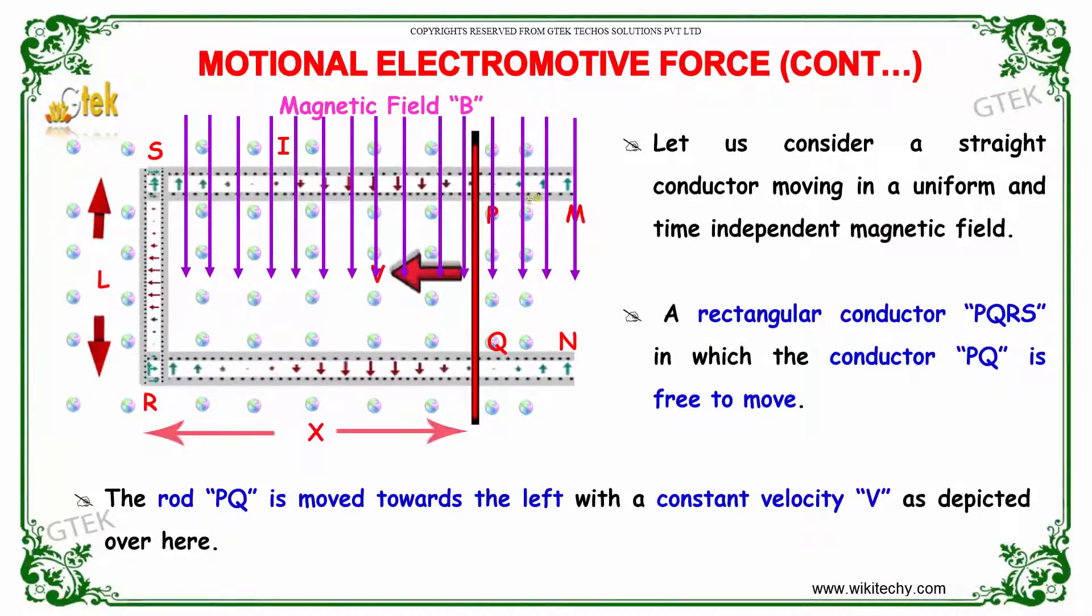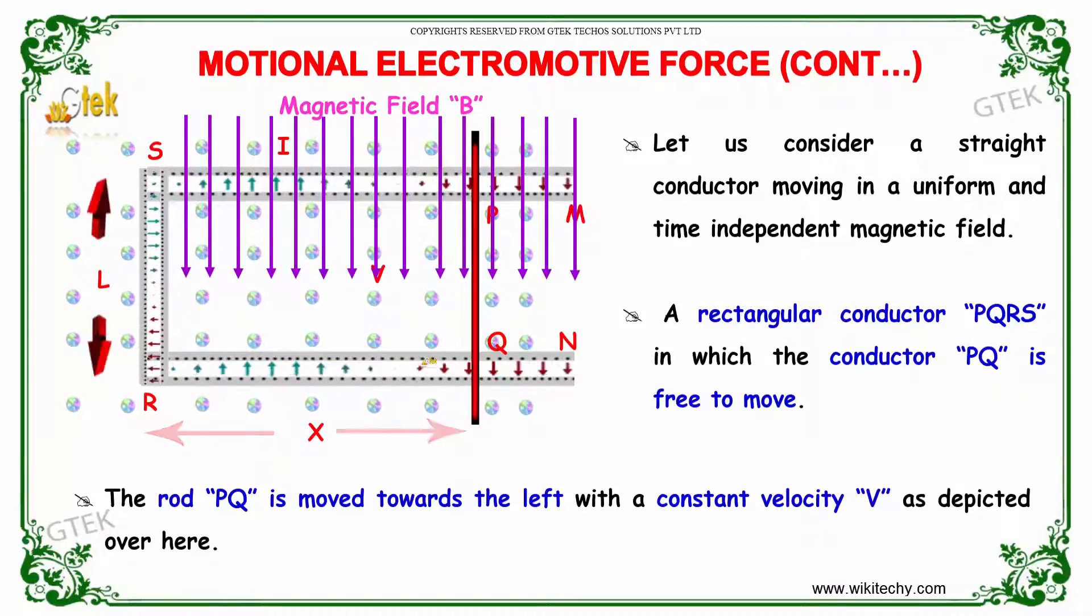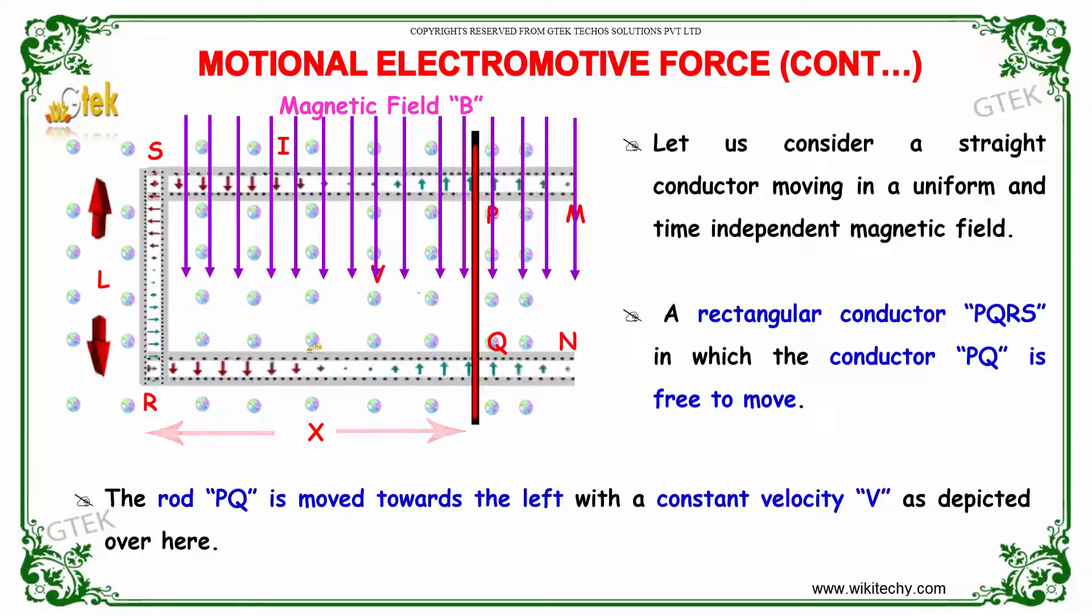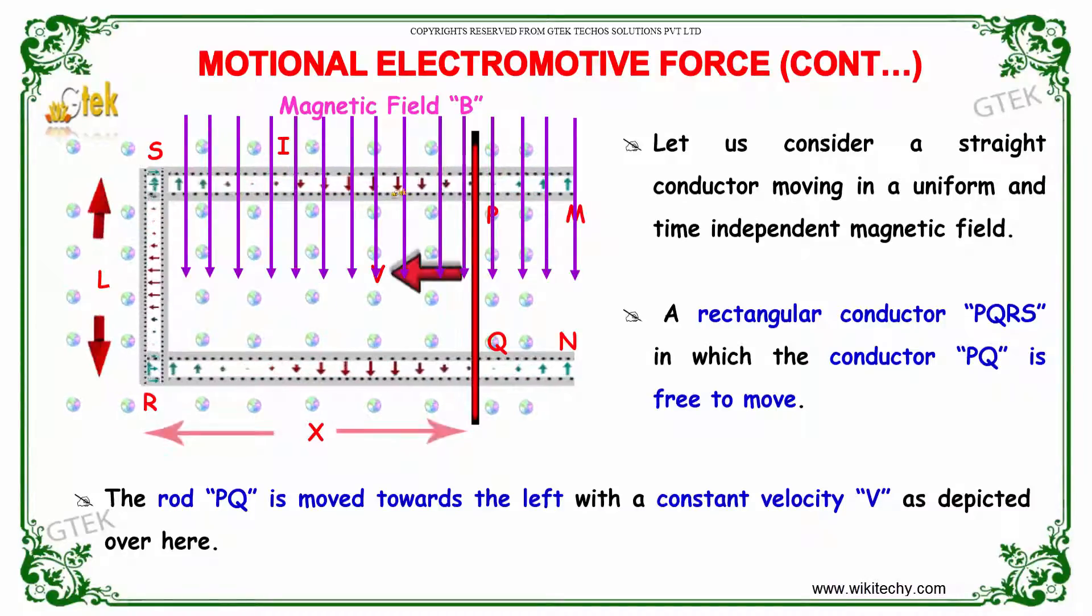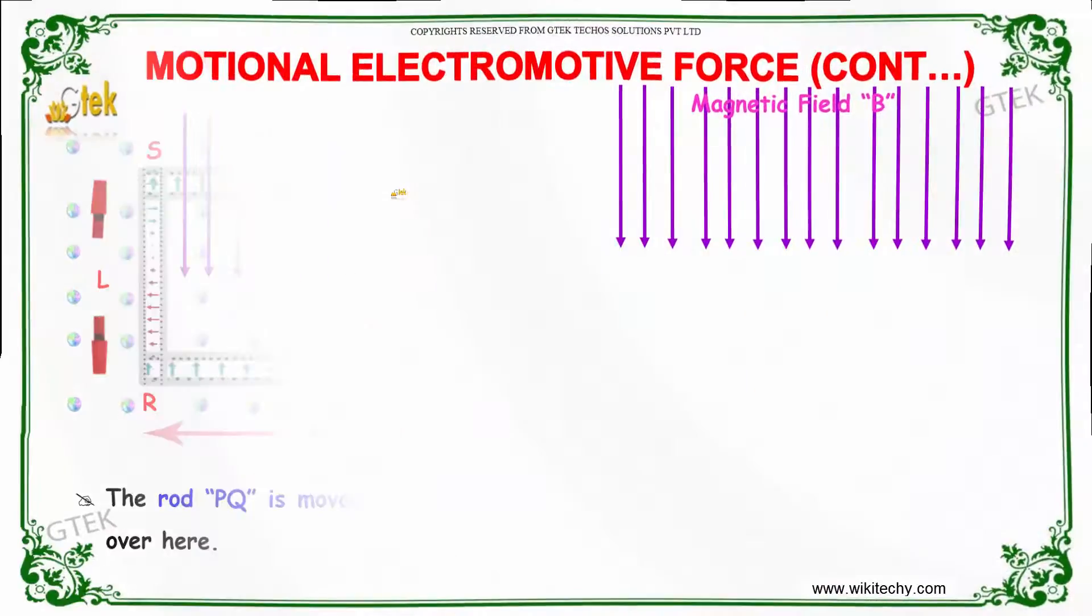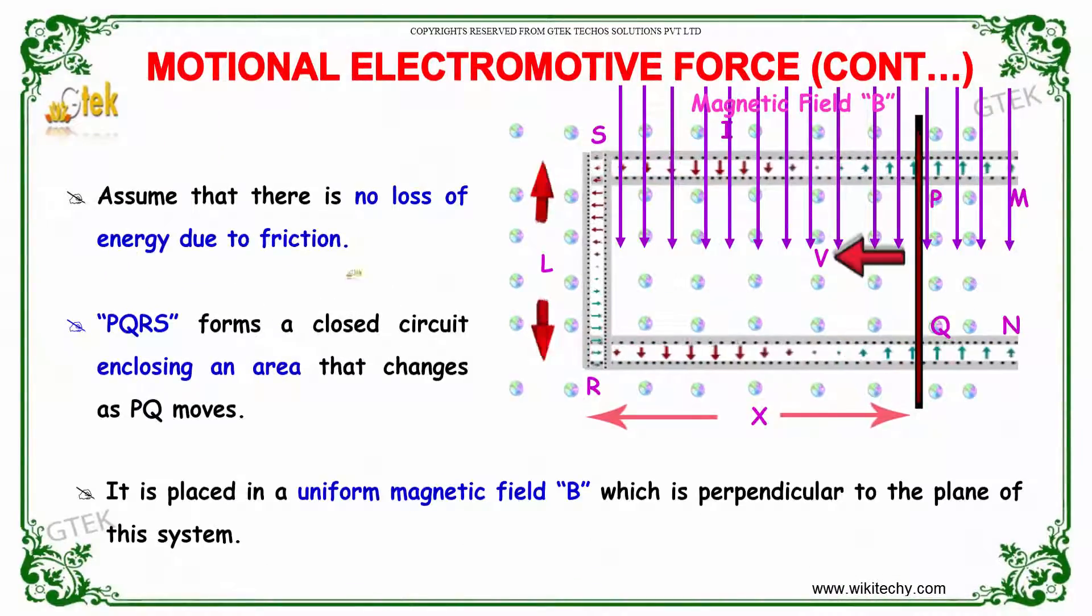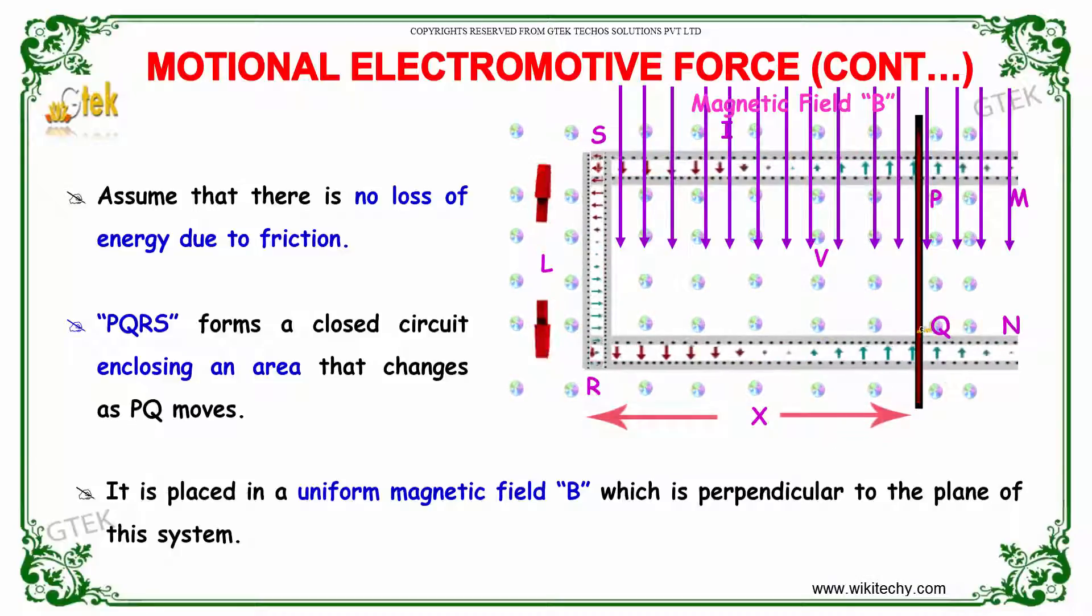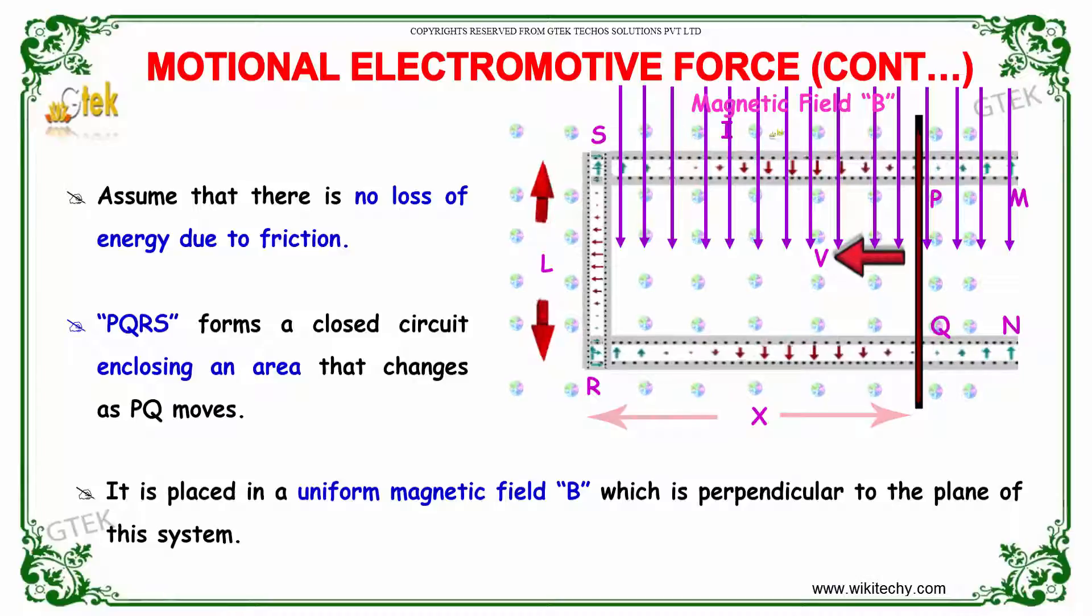Let us consider a straight conductor moving in a uniform and time-independent magnetic field. A rectangular conductor PQRS in which the conductor PQ is free to move. The rod PQ is moved towards the left with constant velocity V as depicted here. Assume that there is no loss of energy due to friction. PQRS forms a closed circuit enclosing an area that changes as PQ moves. It is placed in a uniform magnetic field B which is perpendicular to the plane of the system.